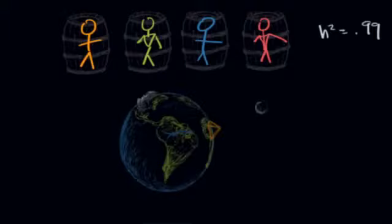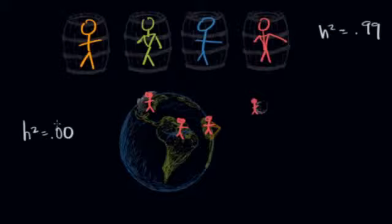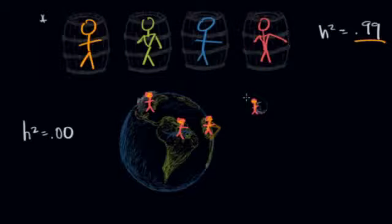Alternatively, imagine four identical quadruplets with the same genome raised in completely different environments—one in a rainforest, one in a desert, one in a North American family, one on the International Space Station. The heritability of their intelligence would be quite low, perhaps 0%, because the environments account for all the differences in intelligence. So as the environment becomes more controlled, differences in behavioral traits are more closely tied to heredity; and increased genetic variation also raises heritability.